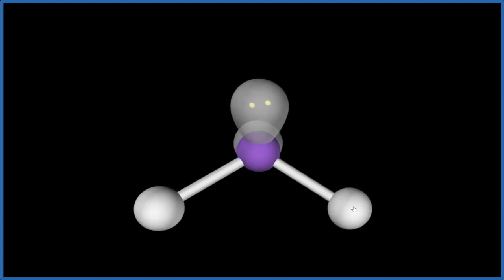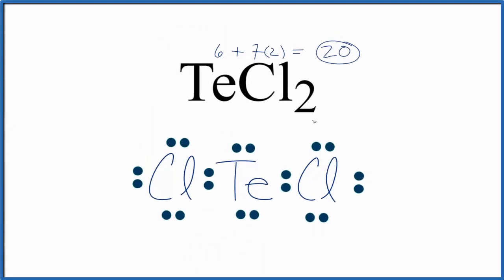Back to our Lewis structure. You could also use the AXE notation to figure out the molecular geometry for TeCl2. A is the central atom, that's the tellurium. X is the atoms around it, we have the two chlorine atoms. And then E is the number of lone pairs, one, two. So we end up with AX2E2, which if you look it up or memorize it, is bent molecular geometry.